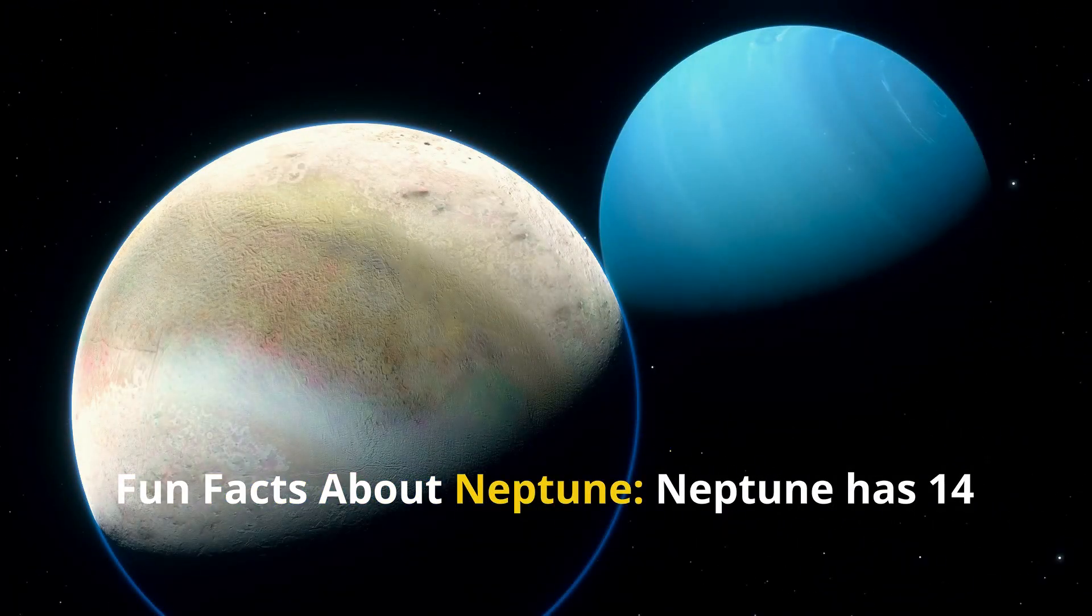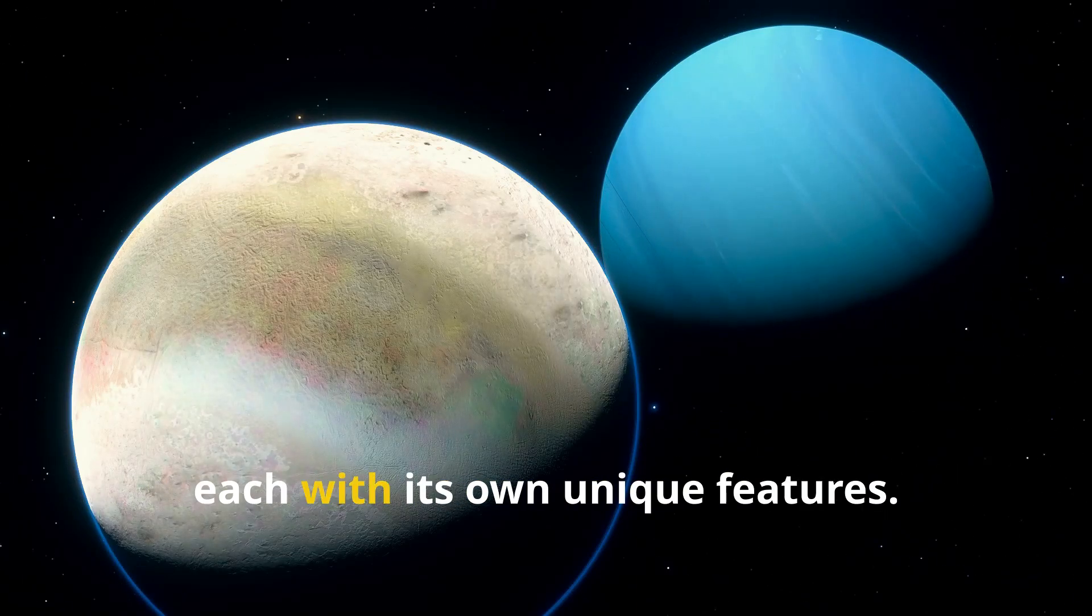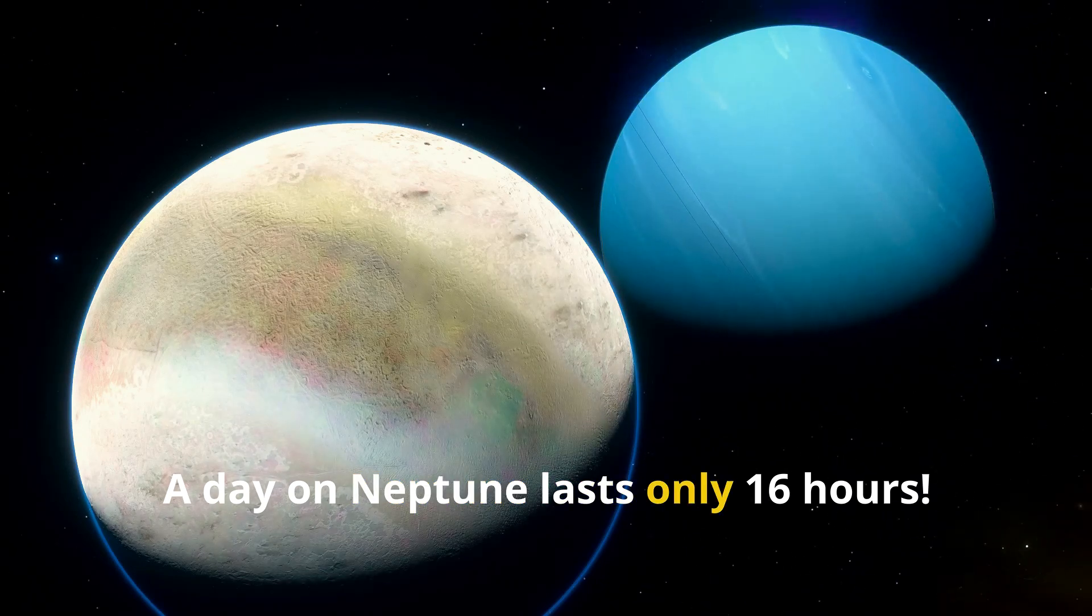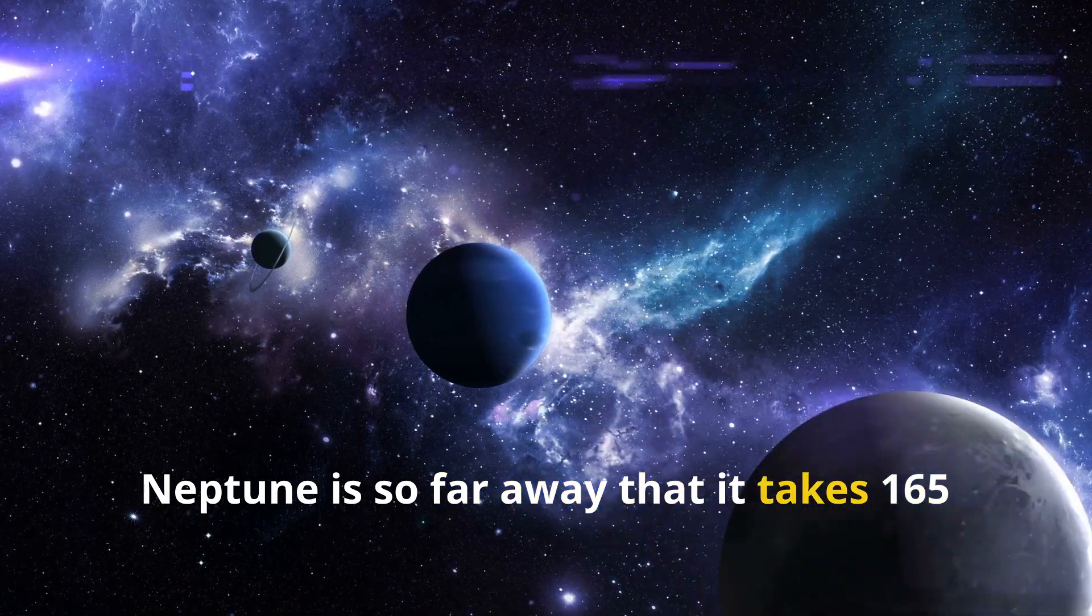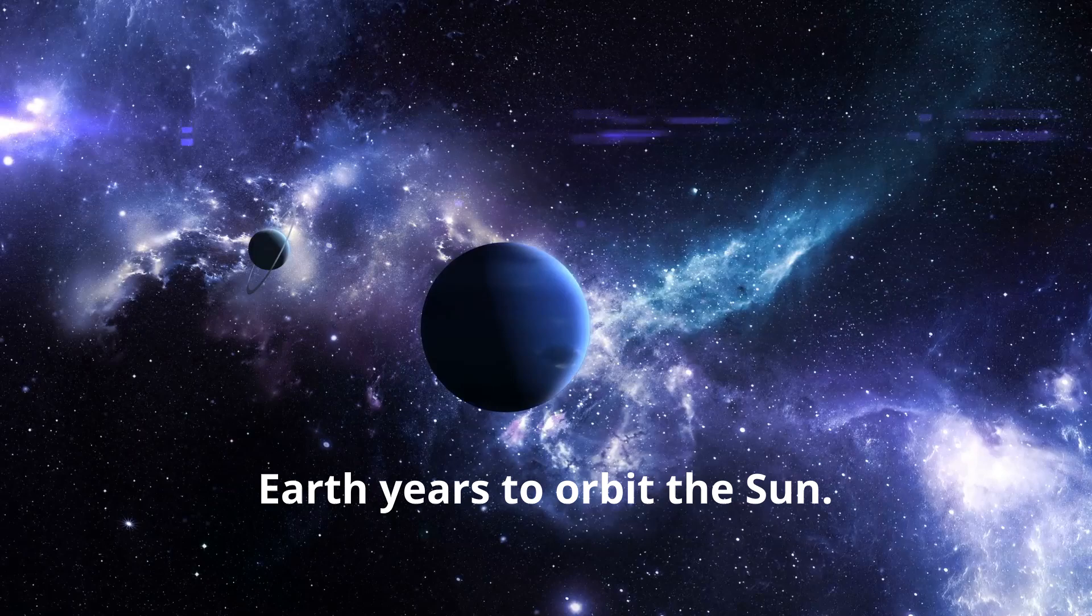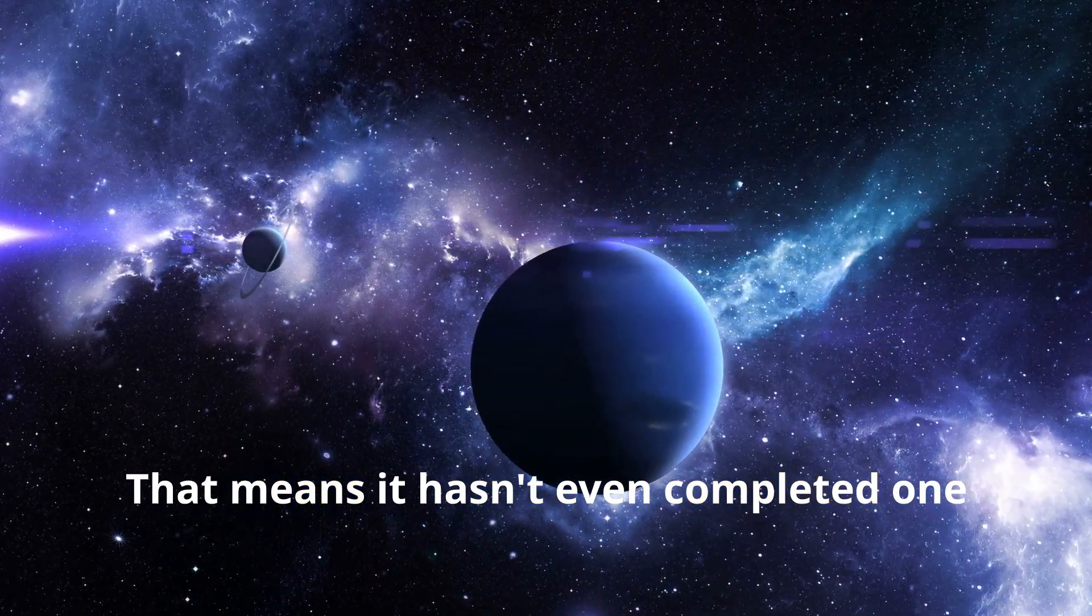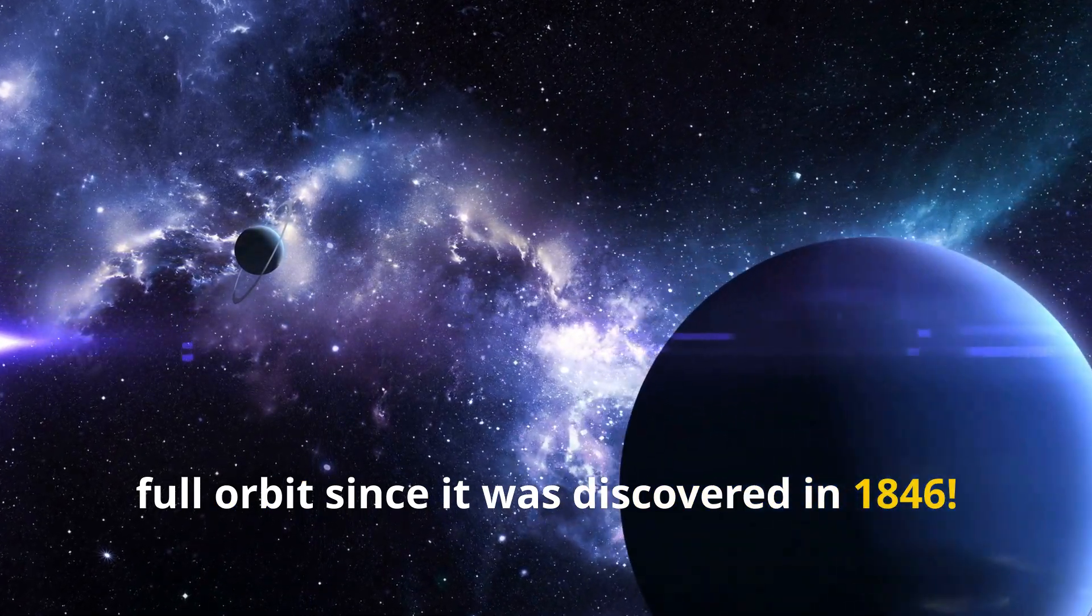Fun facts about Neptune. Neptune has 14 known moons, each with its own unique features. A day on Neptune lasts only 16 hours. Neptune is so far away that it takes 165 Earth years to orbit the Sun. That means it hasn't even completed one full orbit since it was discovered in 1846.